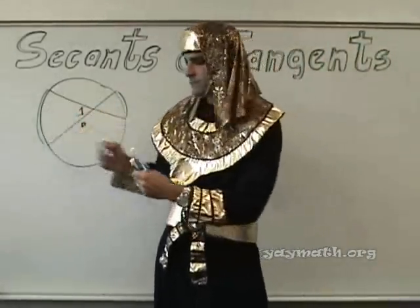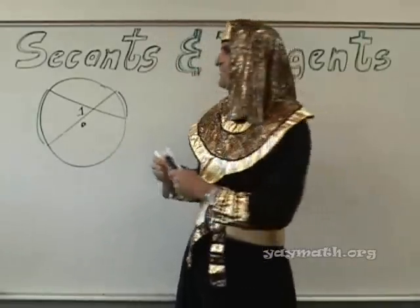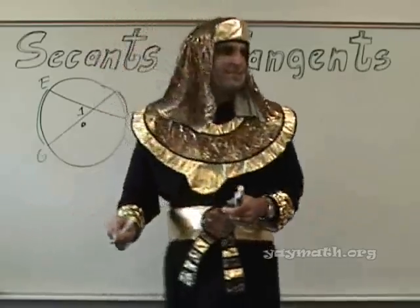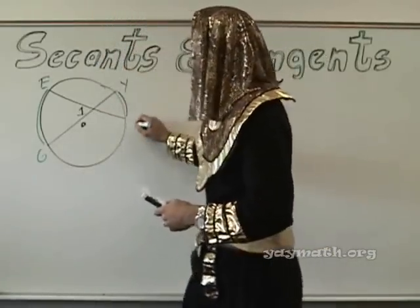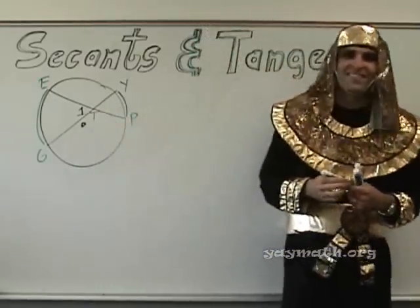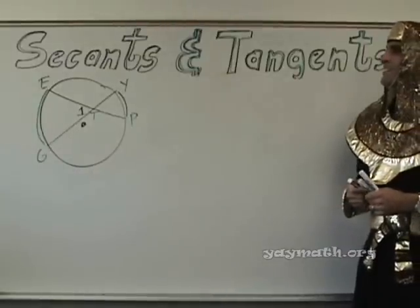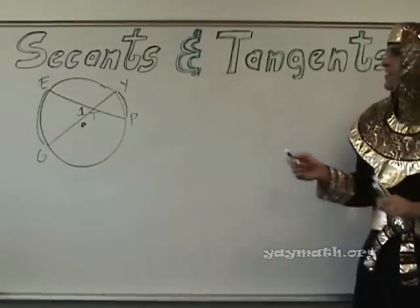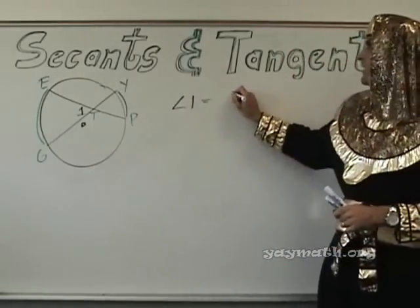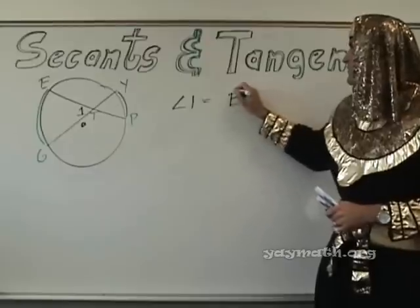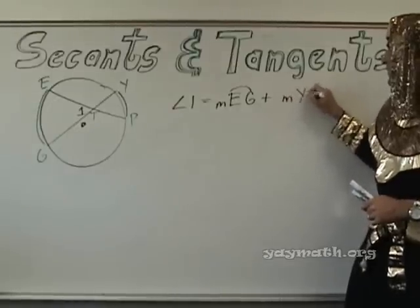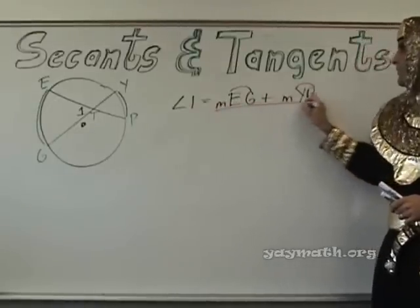What do you want to call this one? I'll make a suggestion — can we spell it? E, G, Y, Y, and then the center of the circle is T. Angle one equals arc DG plus arc YP all over 2.